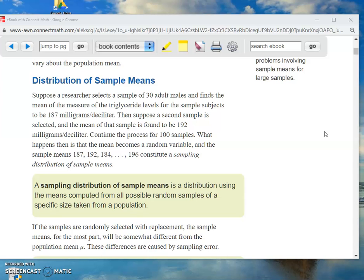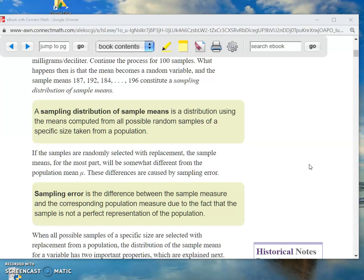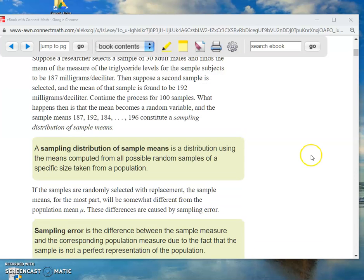Now, doesn't that sound confusing? Let's just look at it, though. Here's the definition there in the green box. A sampling distribution of sample means. So the sample means are the X-bars. A sampling distribution of the X-bars is a distribution using the means of the samples. All the X-bars is a distribution of the X-bars. You can't change the size. Up above here, there was 30 adult males. You have to keep it at 30 adult males. But you take all possible random samples of 30 men. And that's taken from a population. So you don't need to know what the population size is. All you need to know is the sample size.